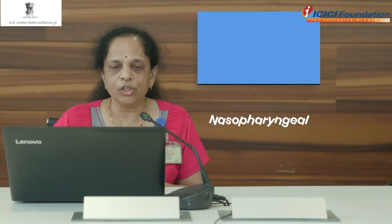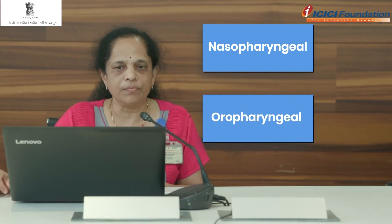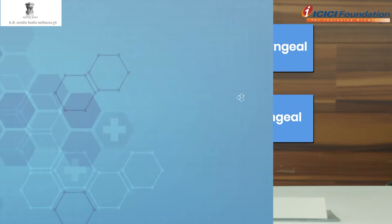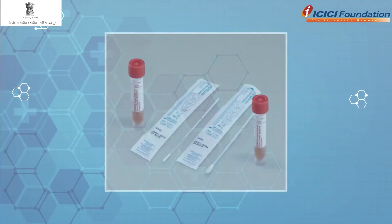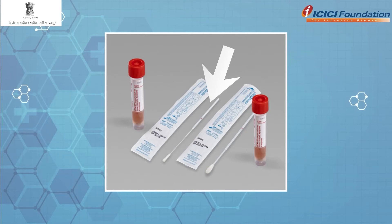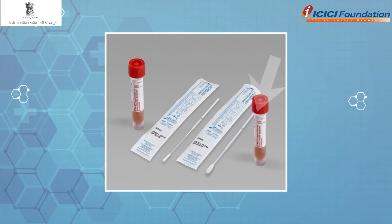We collect two different swabs: nasopharyngeal swab and oropharyngeal swab. These swabs are shown in the slide — one is thin and one is thick. The thin one is used for nasopharyngeal swab and the thick one is used for collection from the throat, that is the oropharyngeal swab.